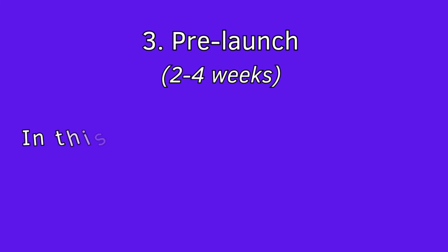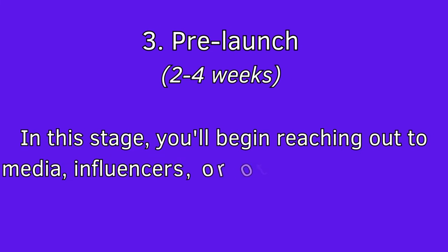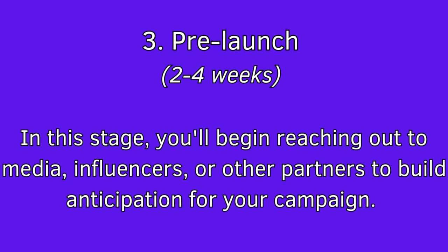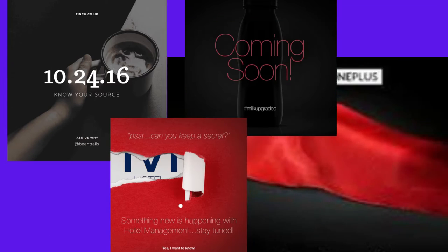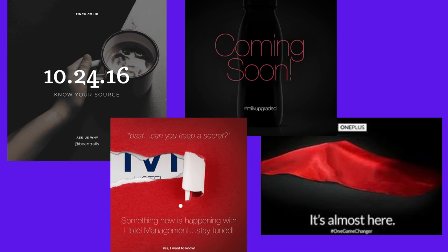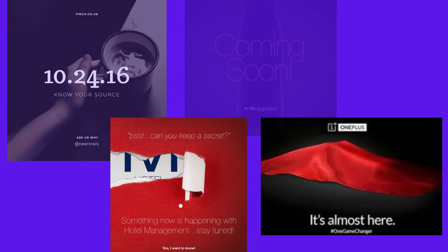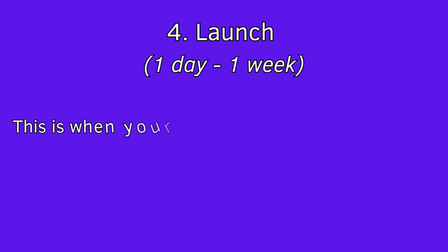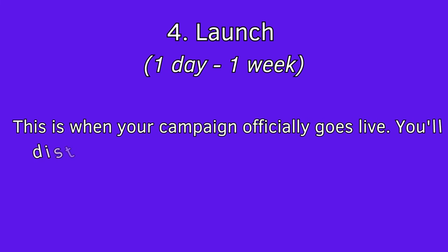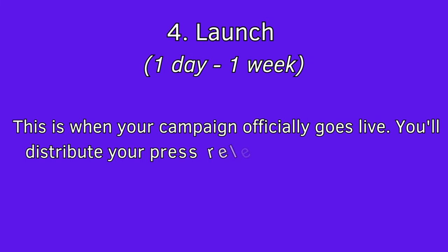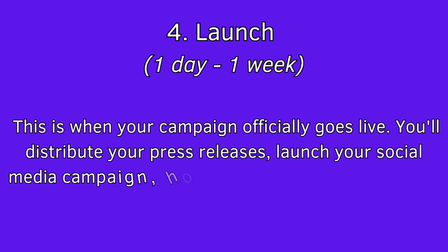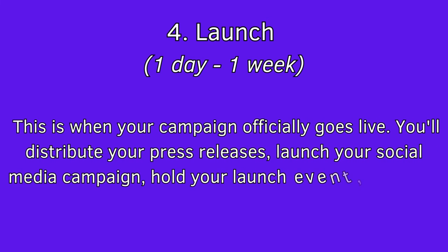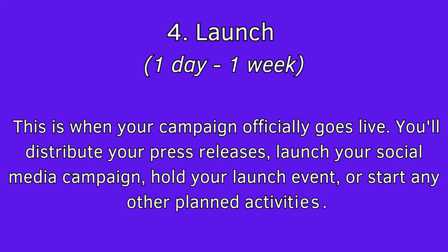Stage 3: Pre-launch, 2-4 weeks. In this stage, you will begin reaching out to media, influencers, or other partners to build anticipation for your campaign. You might send out teasers, hold a pre-launch event, or begin sending out content on your own channels. Stage 4: The Campaign Launch, which can range from about a day to a week. This is when your campaign officially goes live — you will distribute your press releases, launch your social media campaign, hold your launch event, or start any other planned activities.